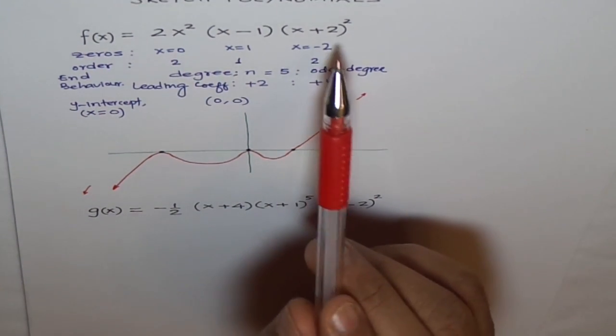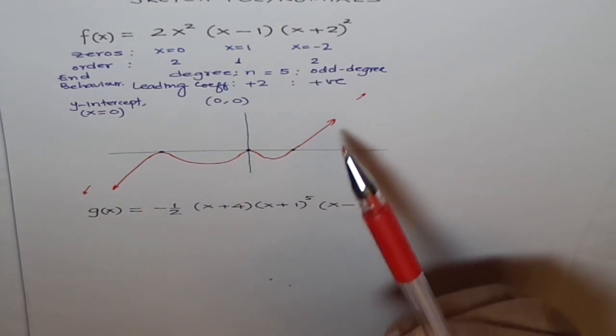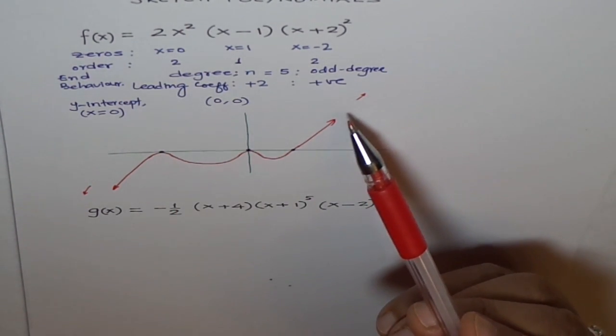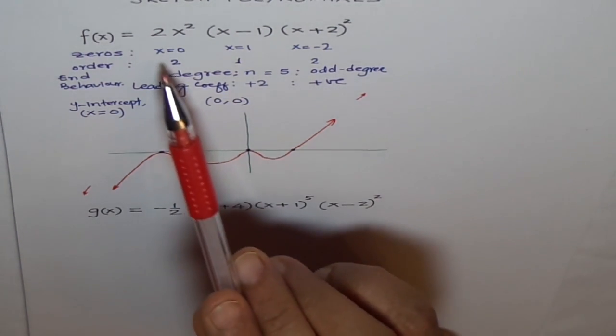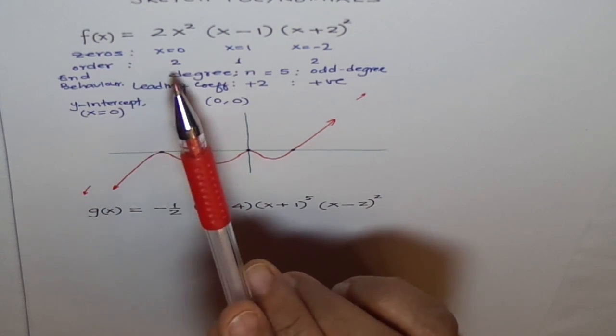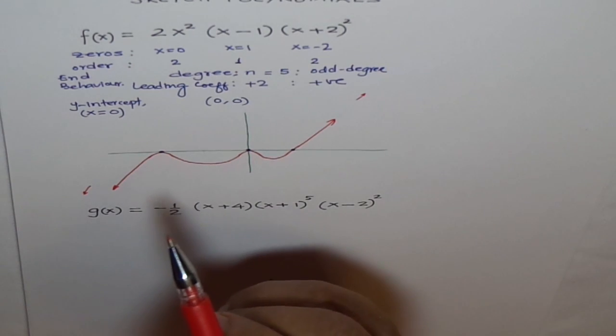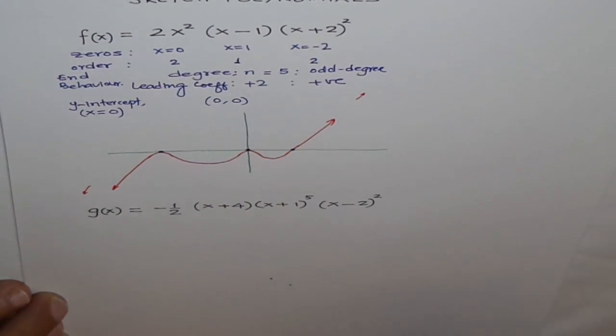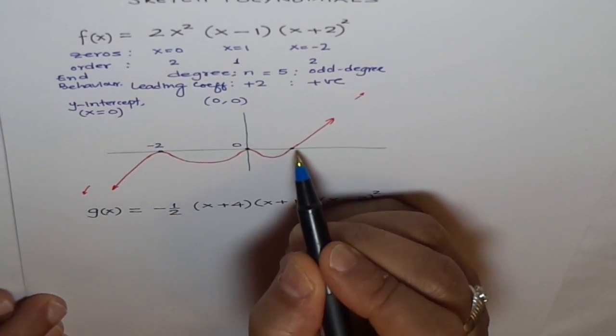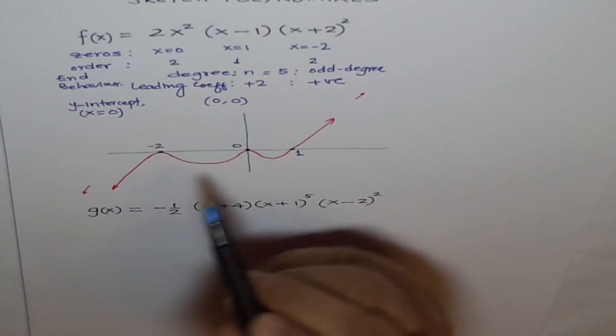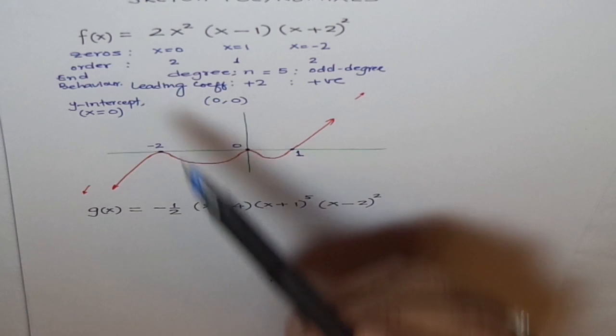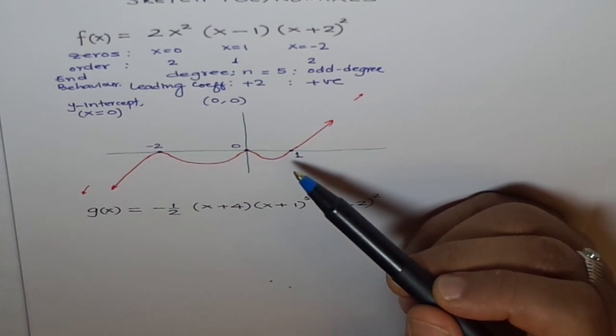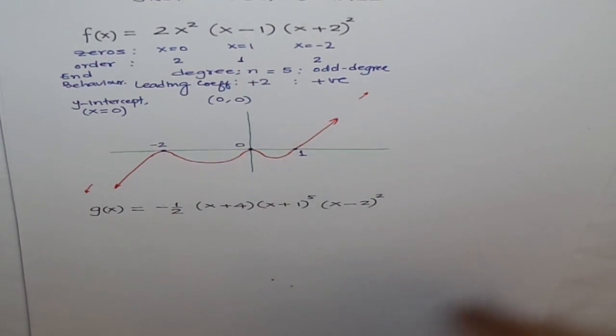You can check it. The degree of the polynomial is 2 plus 1 plus 2 equals 5, which is odd, meaning opposite ends. That is the end behavior. Leading coefficient is positive, right side up, so it goes from quadrant 3 to 1. At x equals zero, we have a zero with multiplicity 2, so it bounces back. At minus 2, multiplicity 2, it bounces back. And then returns and crosses the line in a linear function since this zero is like a linear zero, the factor is x minus 1.